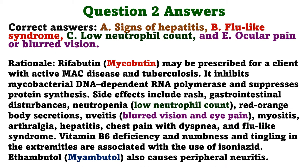Rationale. Rifabutin may be prescribed for a client with active MAC disease and tuberculosis. It inhibits mycobacterial DNA-dependent RNA polymerase and suppresses protein synthesis. Side effects include rash, gastrointestinal disturbances, neutropenia, red-orange body secretions, uveitis, myositis, arthralgia, hepatitis, chest pain with dyspnea, and flu-like syndrome. Vitamin B6 deficiency and numbness and tingling in the extremities are associated with the use of isoniazid. Ethambutol also causes peripheral neuritis.